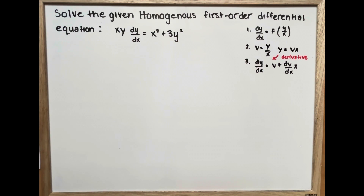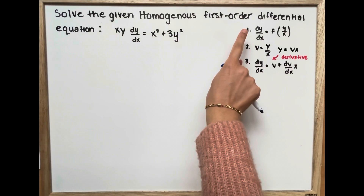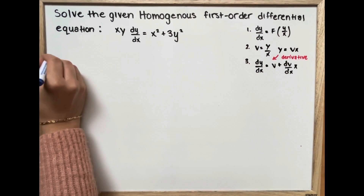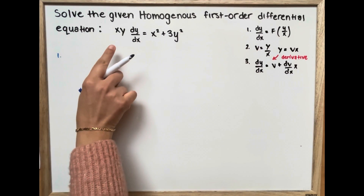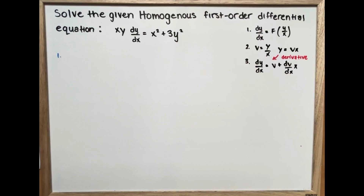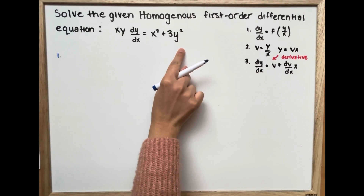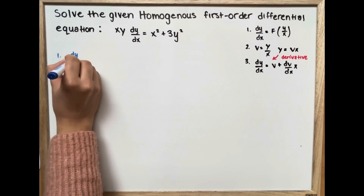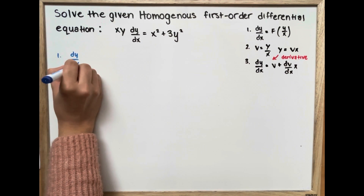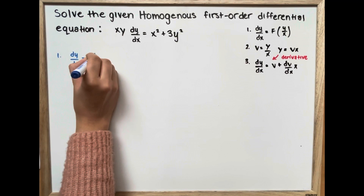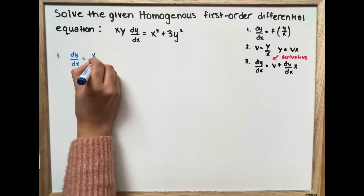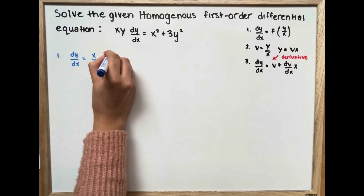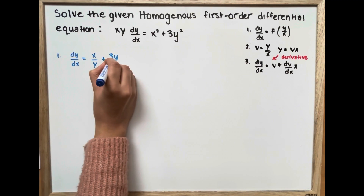Our first step is to write this equation in standard form. We take xy and divide both sides, so we get dy/dx is equal to x over y plus 3y over x.